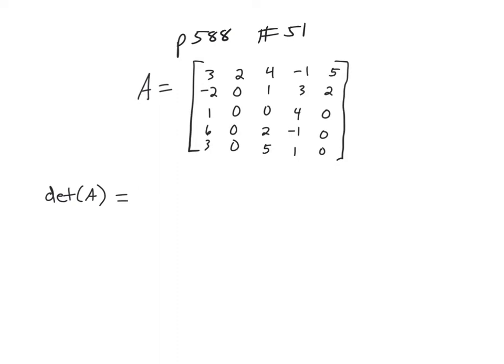OK, this is number 51 on page 588. We're finding the determinant of this using cofactors. When I look at this, I can tell right now that I want to expand along this column because there's only one number in it.